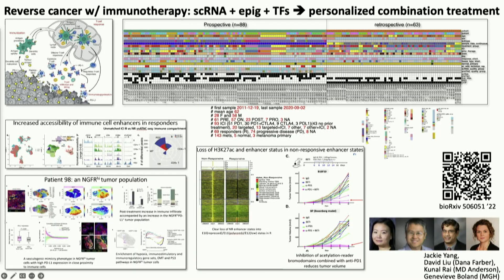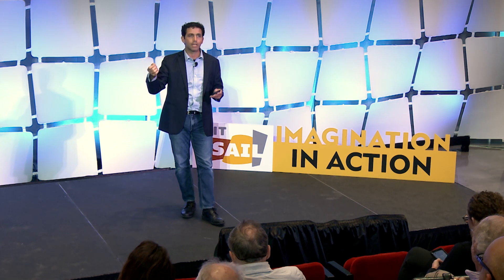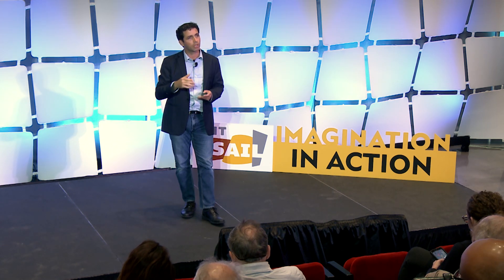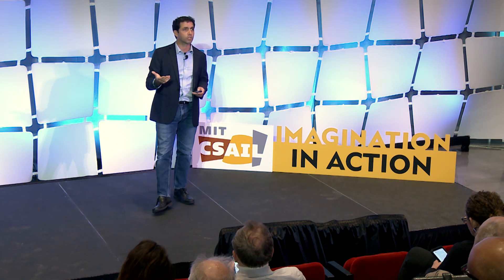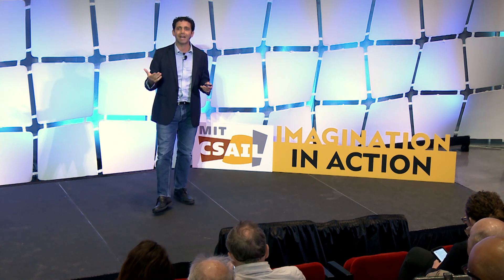Here's a third example: by looking at a cohort of immunotherapy patients, some of whom respond and some of whom do not respond to immunotherapy for metastatic melanoma, we were able to predict a regulator that sits upstream of the non-responders. By overexpressing that regulator, we were able to use a combination therapy that restores the effects of immunotherapy for all patients. That's what we want to do systematically for every disease.